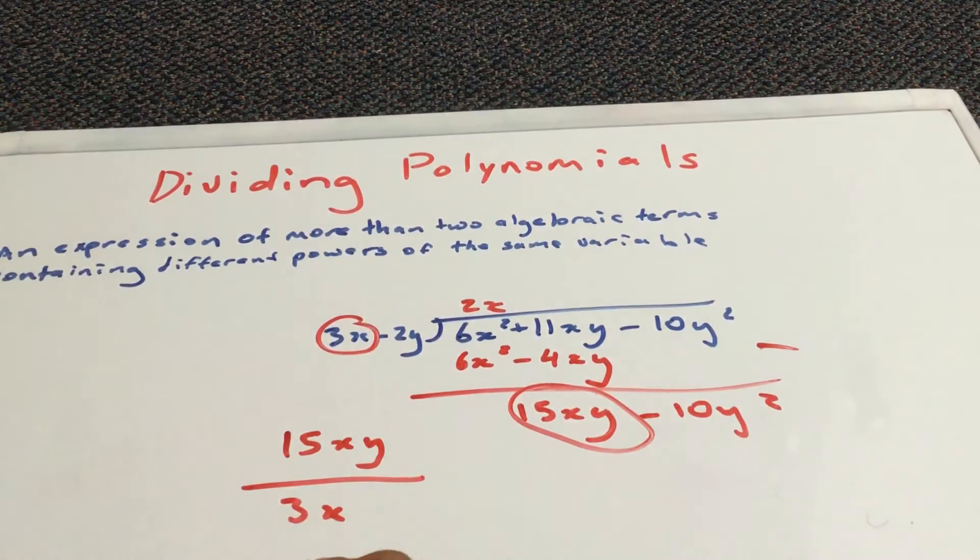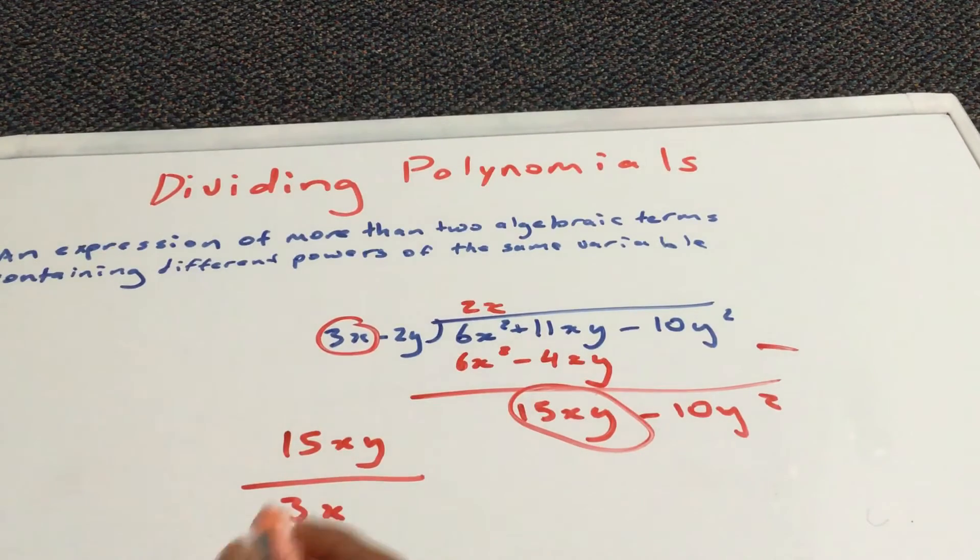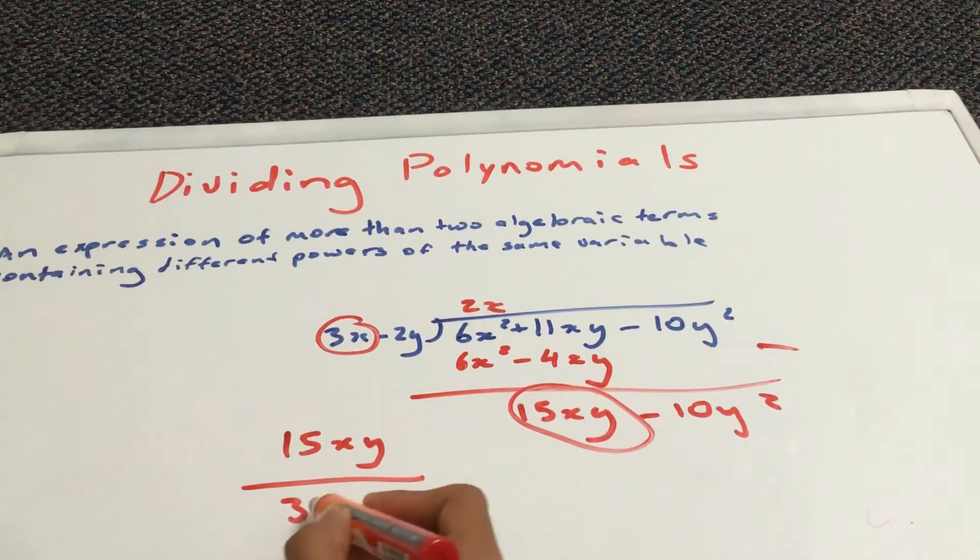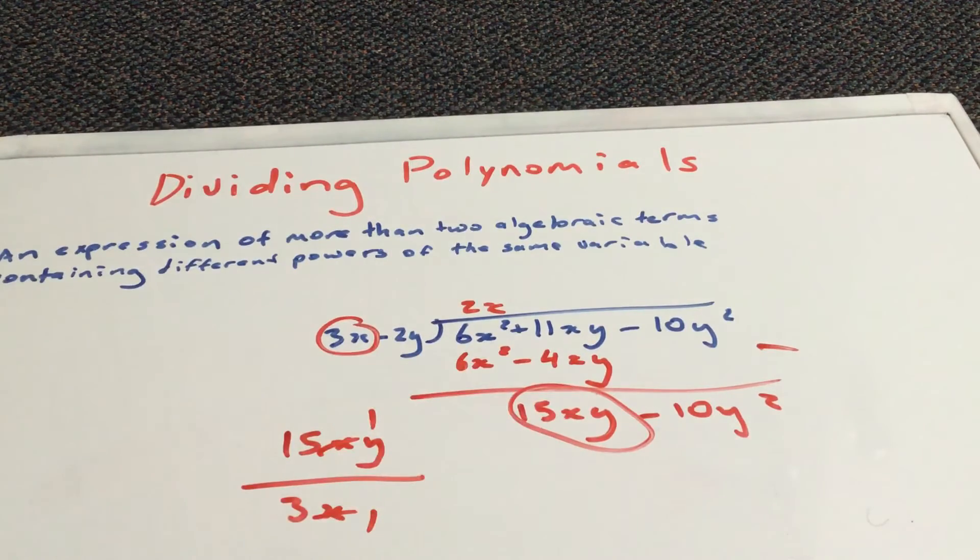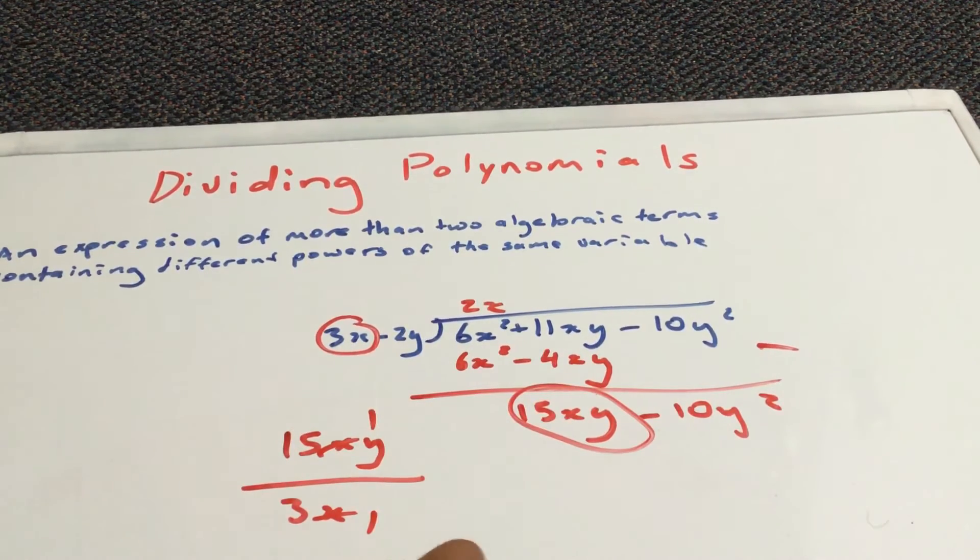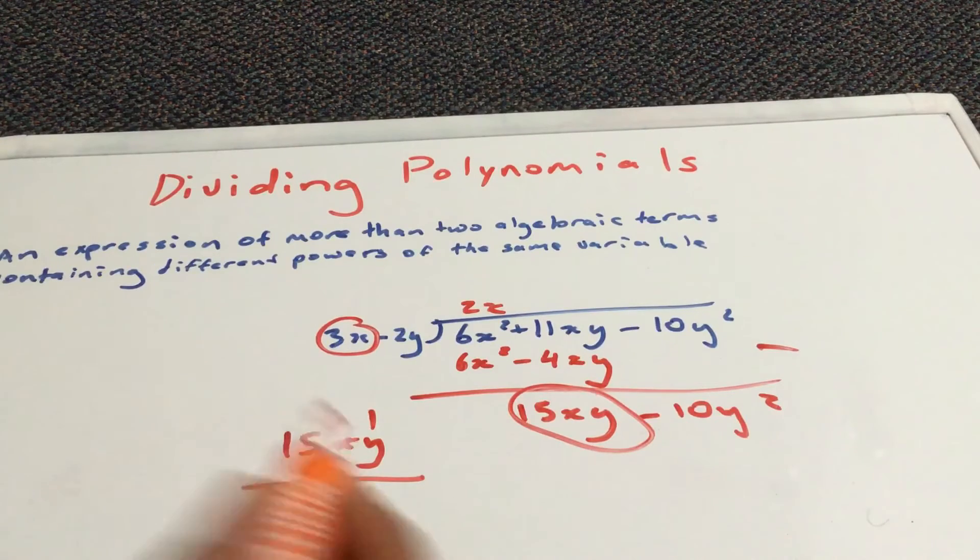So, 15 divided by 3, which you get 5. And, then, x divided by x cancels out. 1 and 1. And, we're left with y at the top. And, that's your answer.